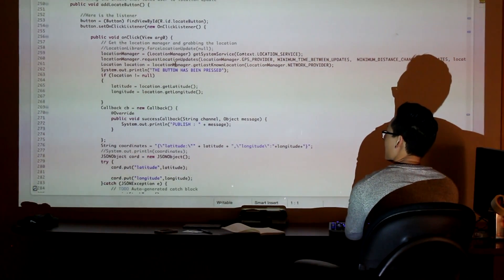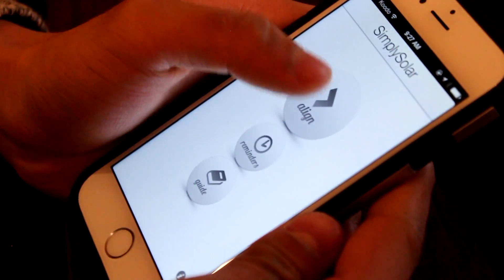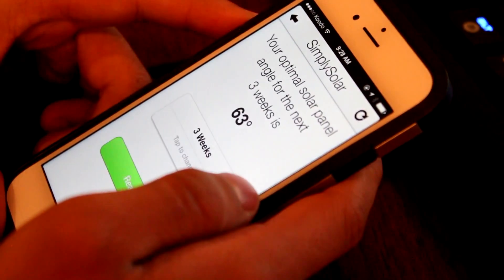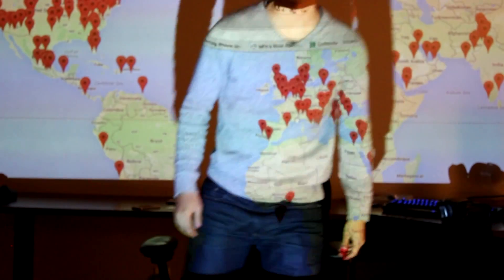And in the end, we came up with Simply Solar, which is a mobile app that allows people to use their mobile phones to align solar panels in developing countries. And this improves them by up to 40%. In collaboration with the United Nations to distribute our software, Simply Solar is now being used in over 130 countries around the world.